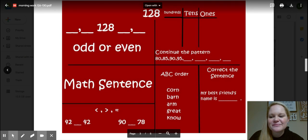Okay guys, so here we go. Number 128. The two numbers that go before 128 are 126 and 127. The two numbers that go after 128 are 129 and 130.